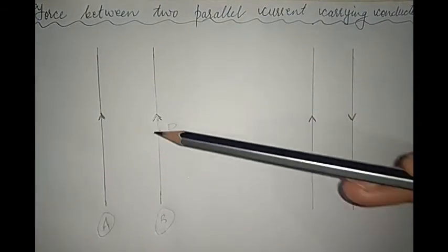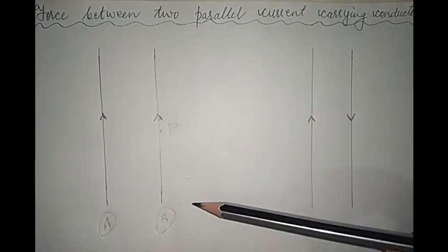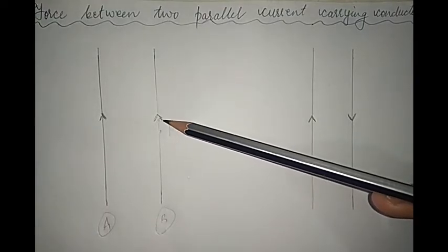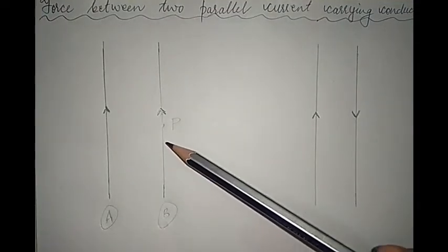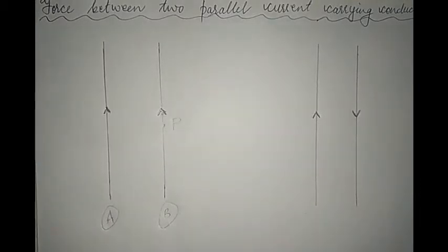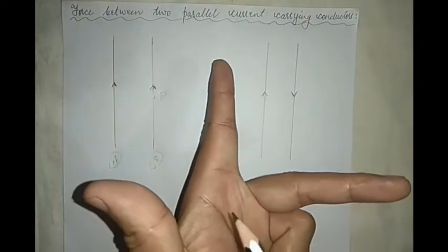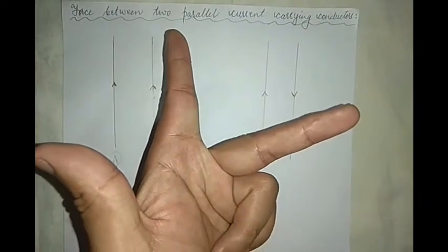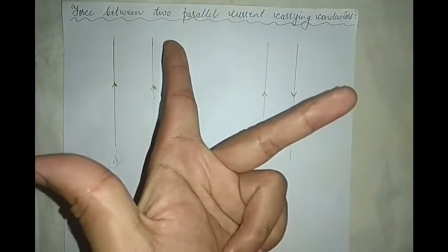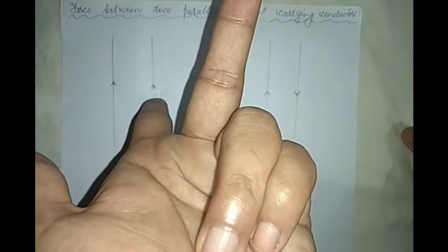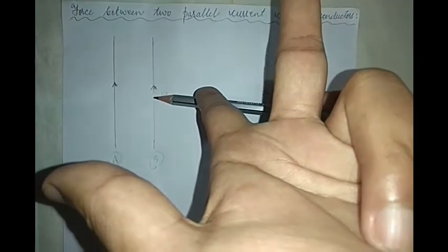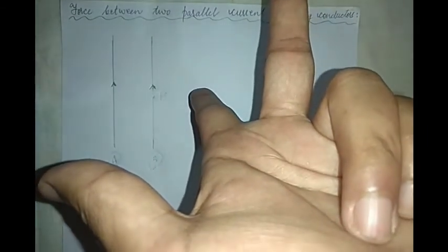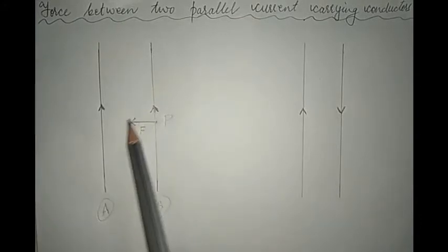In this magnetic field directed into the plane of the paper, we are placing another current-carrying conductor B. We already know that whenever we have a current-carrying conductor placed in a magnetic field it experiences a force. The direction of this force is given by Fleming's left-hand rule: if the forefinger points in the direction of the magnetic field and the middle finger points in the direction of the current, then the thumb points in the direction of the force. So current-carrying wire B in the magnetic field of A experiences a force directed towards conductor A itself.